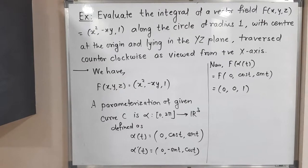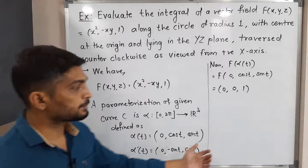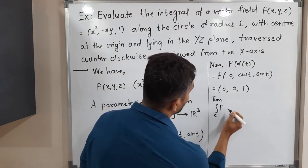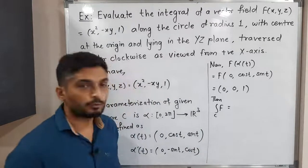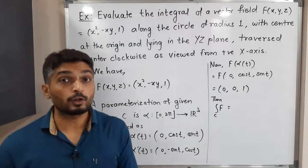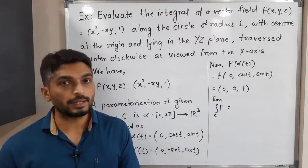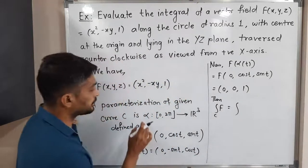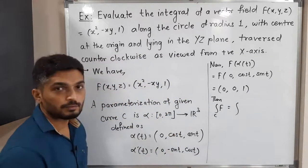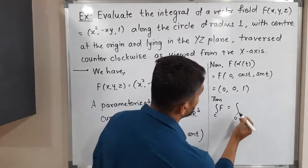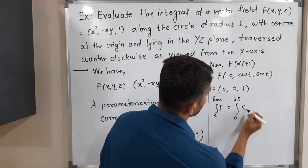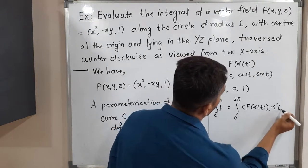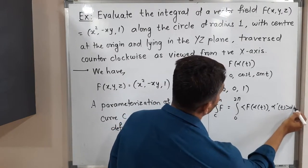I have removed the diagram, so we are getting some space to write. Then integration of F over C. So this is how we have to follow the definition of line integral of a vector field, since F is a vector field here. So integration, our parametrization α defined on closed interval [0, 2π].